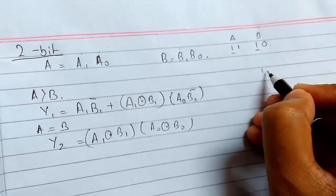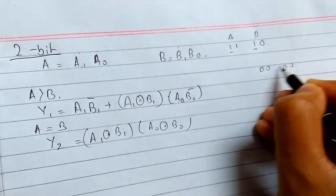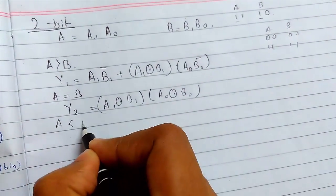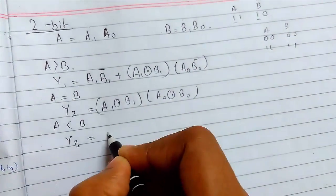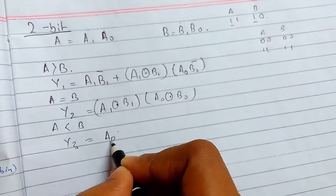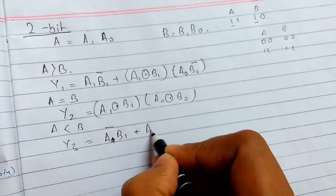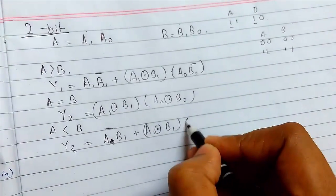And for less, what must happen is like A0 NOT AND B0, A1 NOT AND B1 must happen. Because for less something like this can happen: 10, 11. MSB is same, this LSB is less, this LSB is greater.